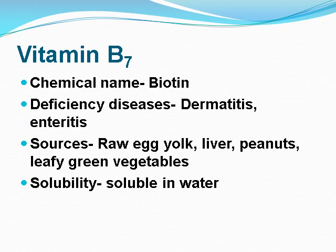Vitamin B7: its chemical name is biotin. Deficiency diseases include dermatitis and enteritis. Sources include raw egg yolk, liver, peanuts, and leafy green vegetables. Solubility: it is soluble in water.